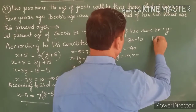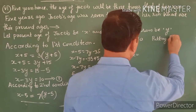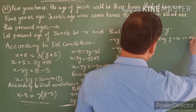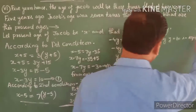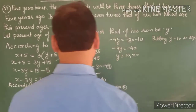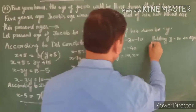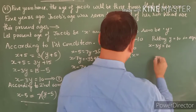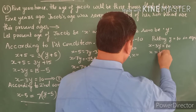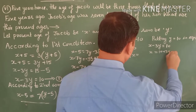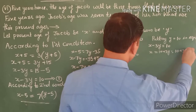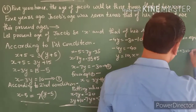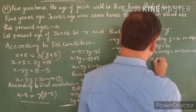Putting y equals 10 in Equation 1: x minus 3y equals 10. So x equals 10 plus 3y equals 10 plus 3 into 10, which gives 30 plus 10, so x equals 40. The value of x is 40 and y is 10.